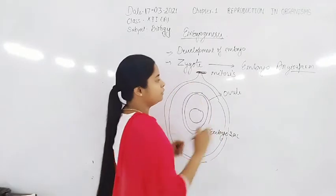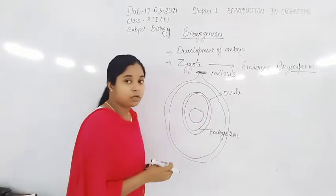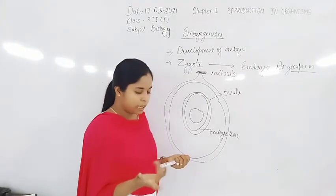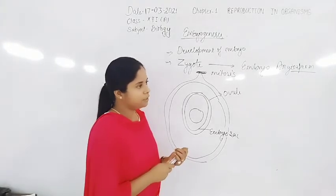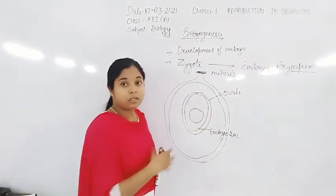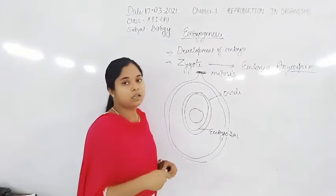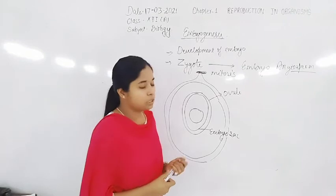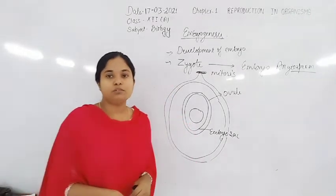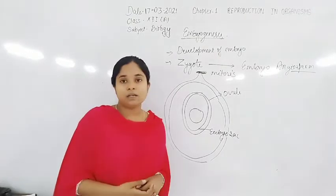After fertilization — there are actually two types of fertilization, which we will discuss in the next chapter on sexual reproduction in flowering plants, including double fertilization, syngamy, and how the formation of embryo takes place inside the seed.